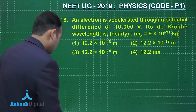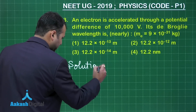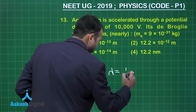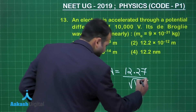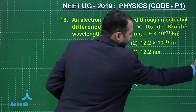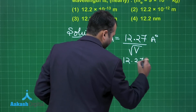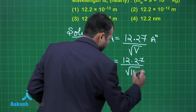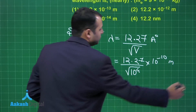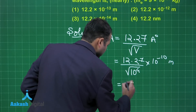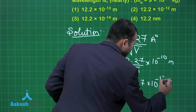It is a very simple formula-based question. The formula is: lambda equals 12.27 divided by the square root of potential, in Angstroms. The potential given is 10,000 volts. So lambda equals 12.27 divided by the square root of 10 to the power 4, giving 12.27 into 10 to the power minus 12 meters.